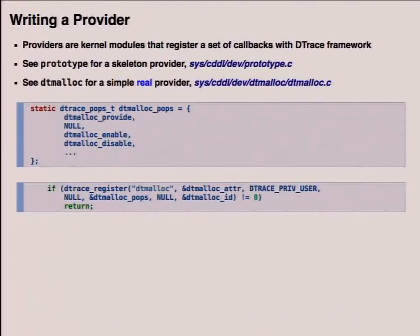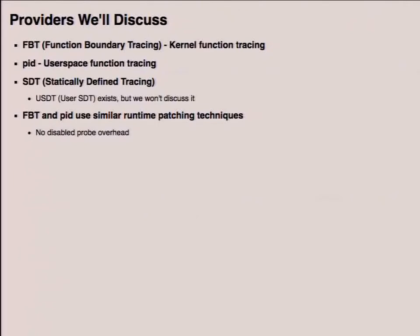Continuing: FBT (function boundary tracing) is how kernel function tracing happens. The PID provider is how user space function tracing happens. SDT is statically defined tracing — it's how you add annotations and static trace points to the kernel. It works a little differently than FBT and PID. FBT and PID use similar runtime patching techniques. The reason they do runtime patching is that DTrace wants to ensure no overhead when not in use. By using runtime patching, there's no disabled probe overhead — an important design goal of DTrace.